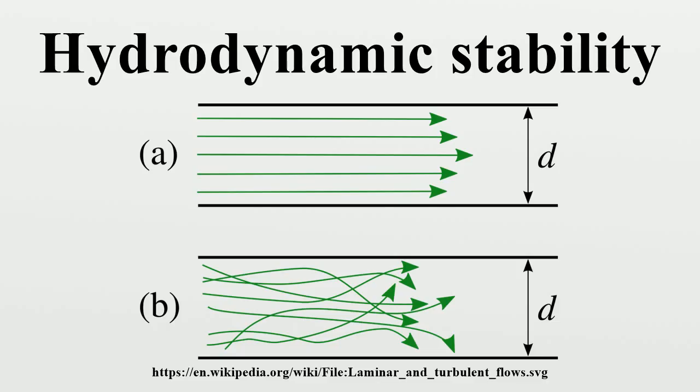Kelvin–Helmholtz instability: The Kelvin–Helmholtz instability is an application of hydrodynamic stability that can be seen in nature. It occurs when there are two fluids flowing at different velocities.